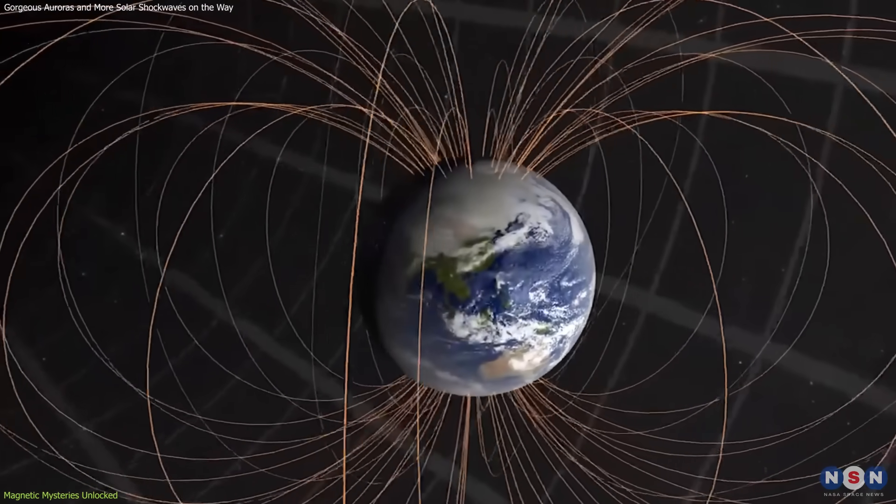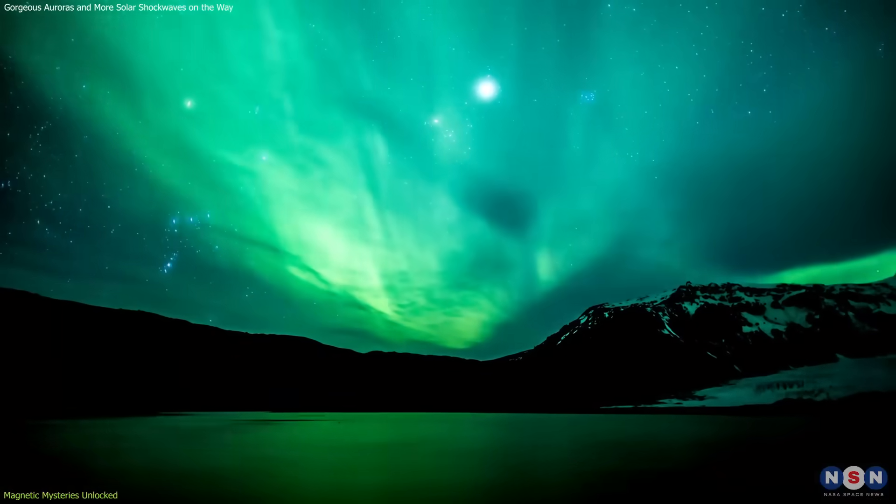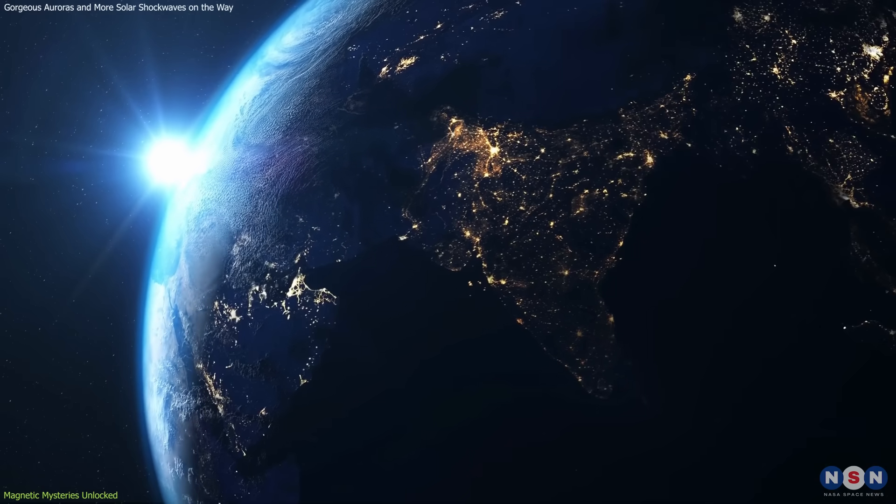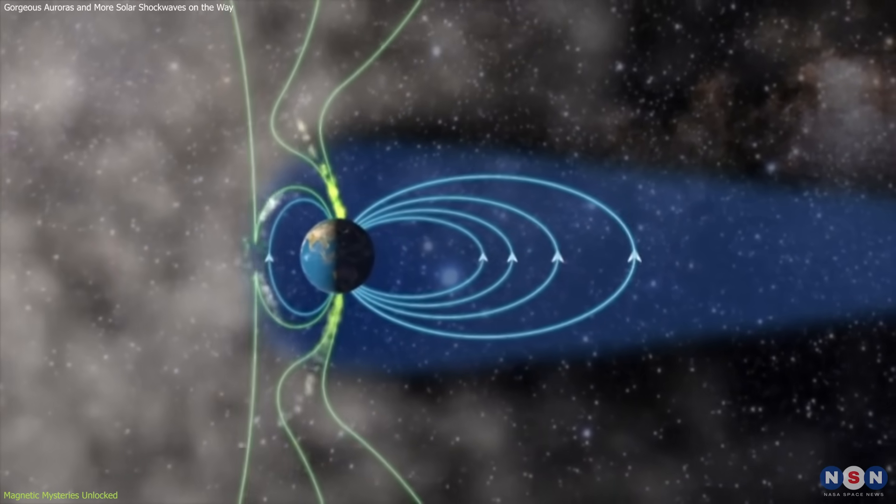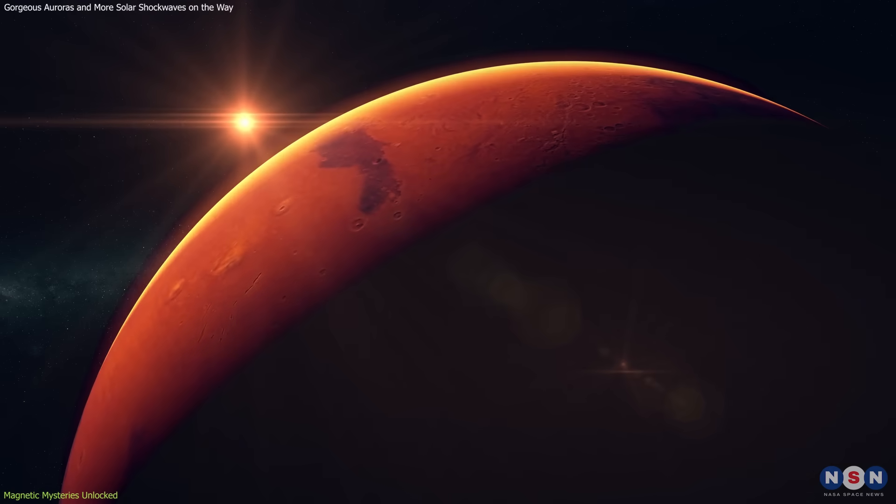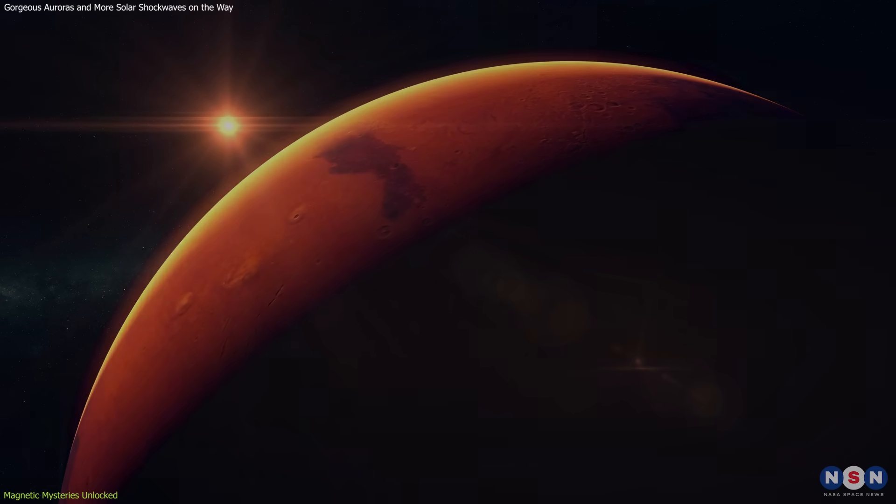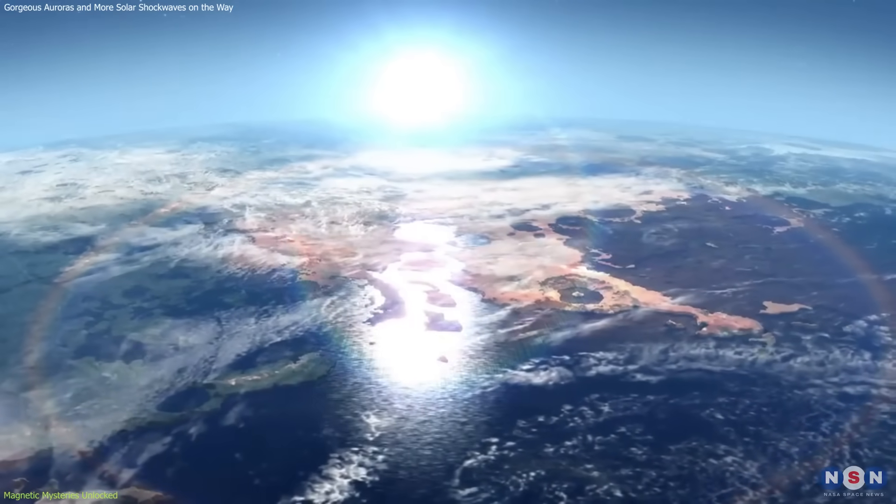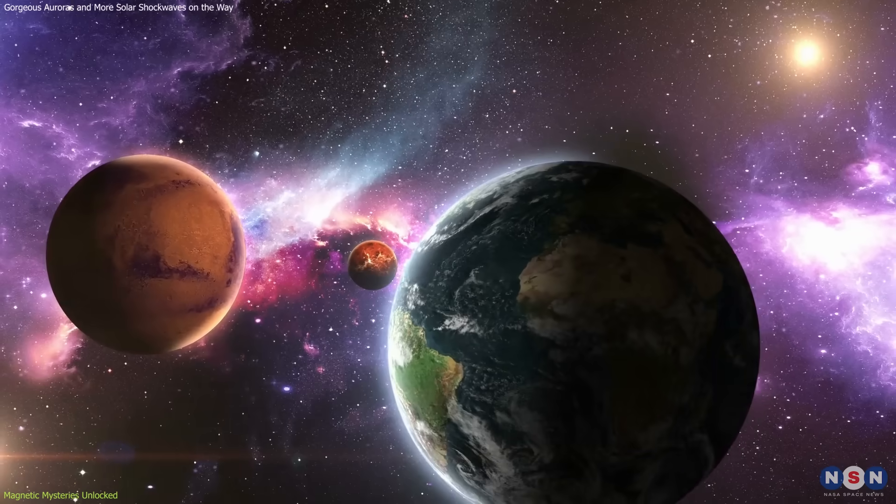But the story of Earth's magnetic field extends beyond just creating spectacular light shows. It is crucial for life on Earth. The magnetic field protects our atmosphere from being stripped away by solar winds, a fate that likely befell Mars after its magnetic field dissipated. The presence of a magnetic field is thus considered essential for maintaining a habitable environment on any planet.